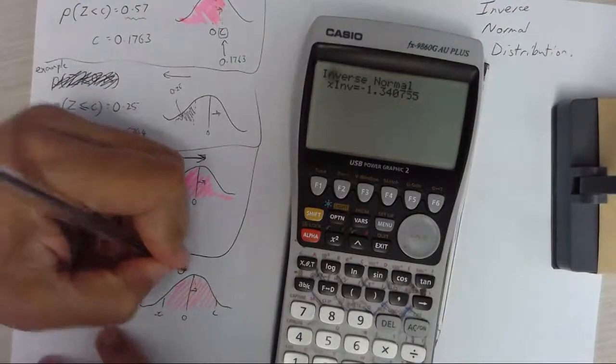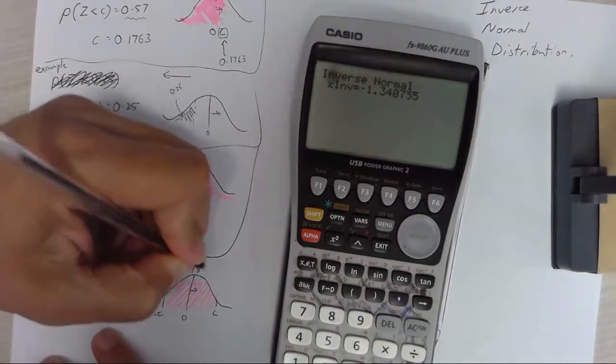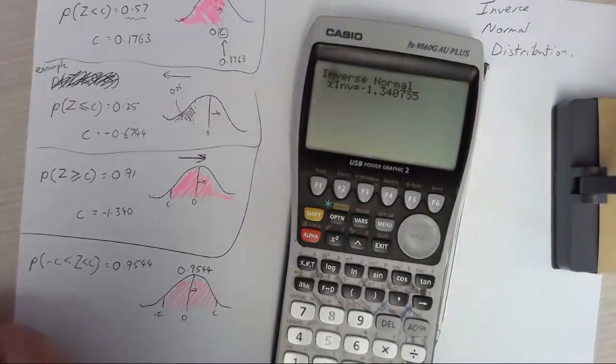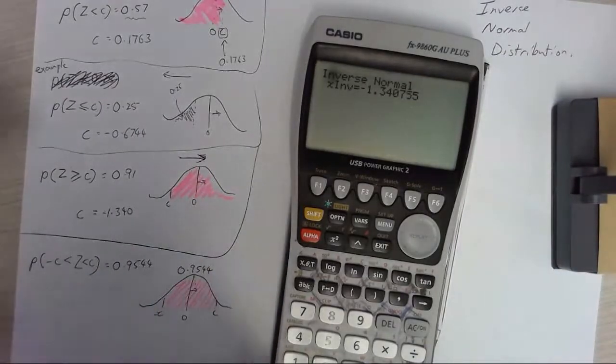And we're going to say that that's 0.9544. Now how are we going to do that? Well we're going to have to use the center.